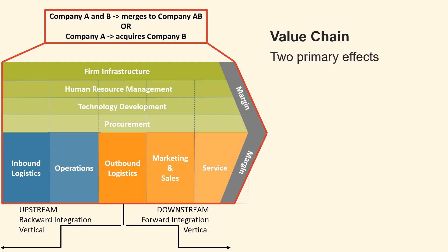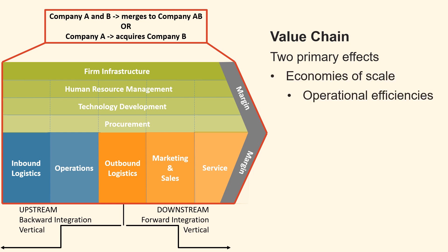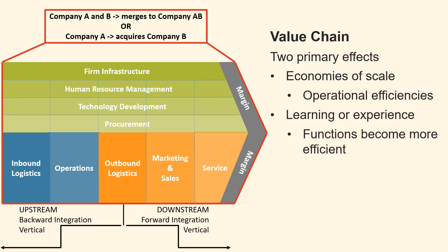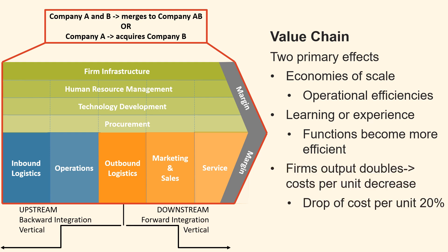Two primary effects arise from a merger or acquisition. The first is economies of scale, which implies that as production expands, the cost per unit decreases due to the distribution of fixed costs over more units and the achievement of operational efficiencies. The second effect is the learning or experience curve, which posits that organisational functions become more efficient as production volume increases, thereby lowering unit costs. For instance, if a company's production doubles, the cost per unit is typically expected to fall by around 20%.